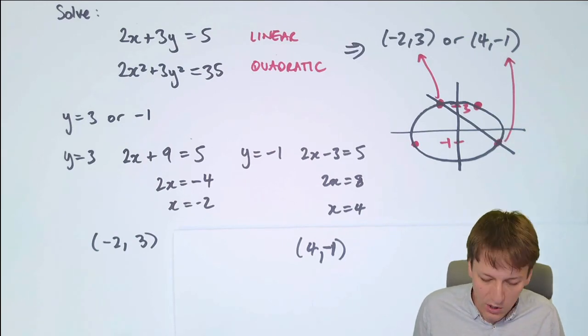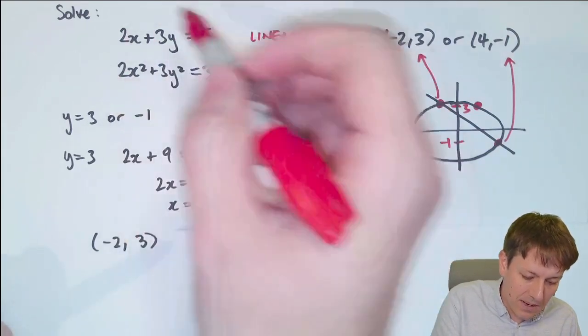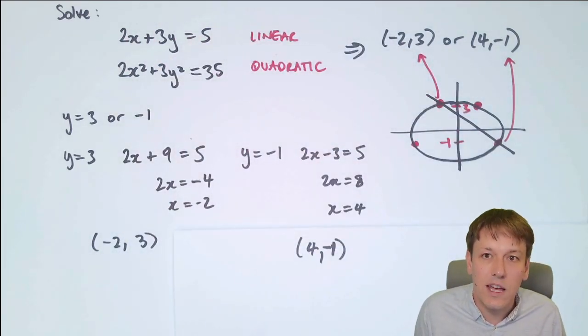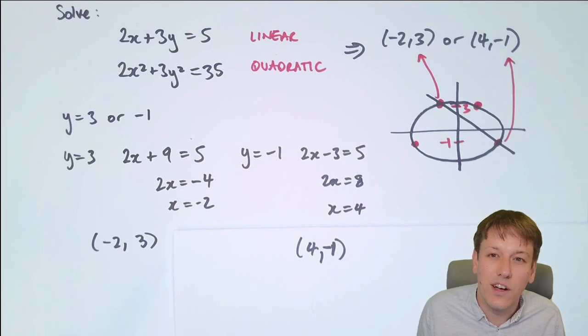If you're ever unsure, you can always double-check your answers by taking these values, substituting them back into both of the equations. That's always a good final check on a simultaneous equations answer to make sure that the answer you've got really does solve the problem you set out to.